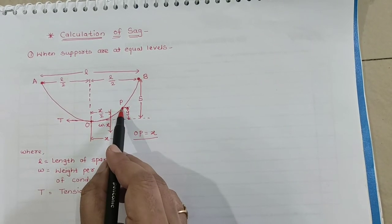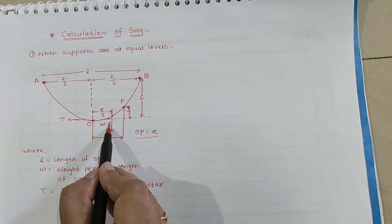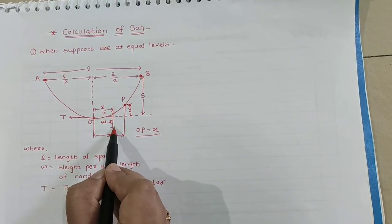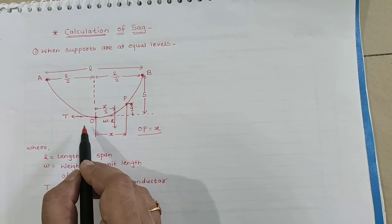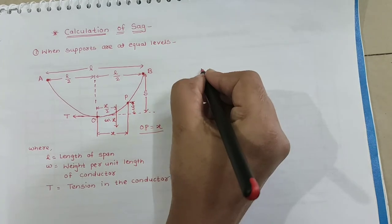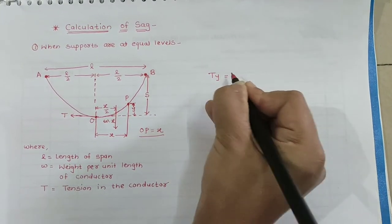So the forces acting on the portion OP are: first one is the weight WX of conductor acting at a distance X/2 from O. Second is the tension T acting at O. Now equating the moments of two forces: TY = WX × X/2.